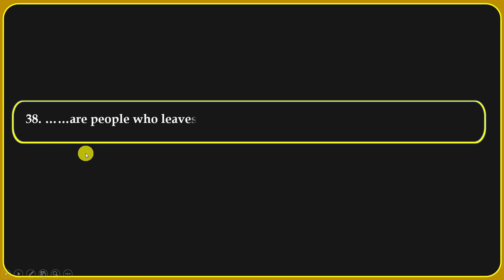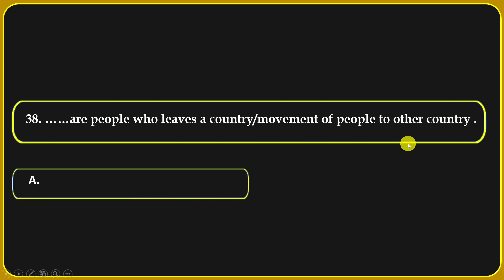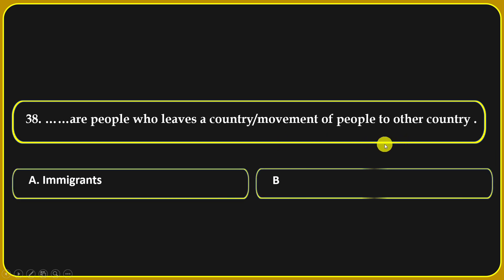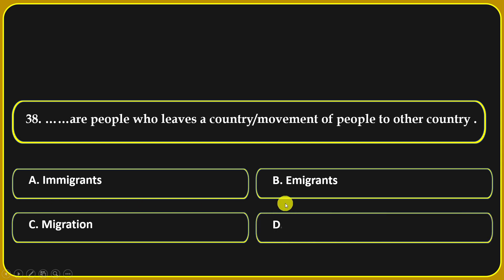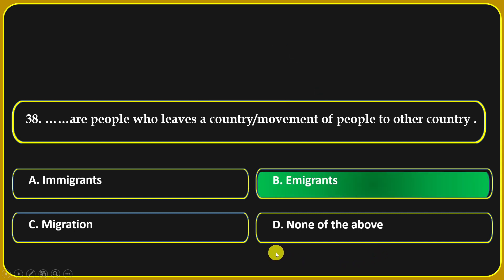People who leave a country — movement of people to another country — are called: immigrants, emigrants, migration, or none of the above. The correct answer is emigrants.